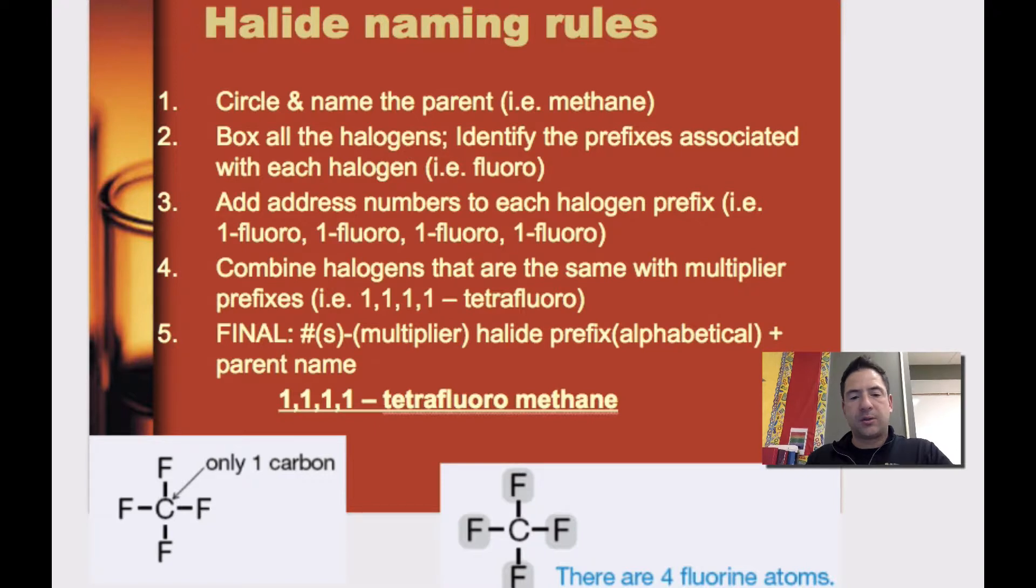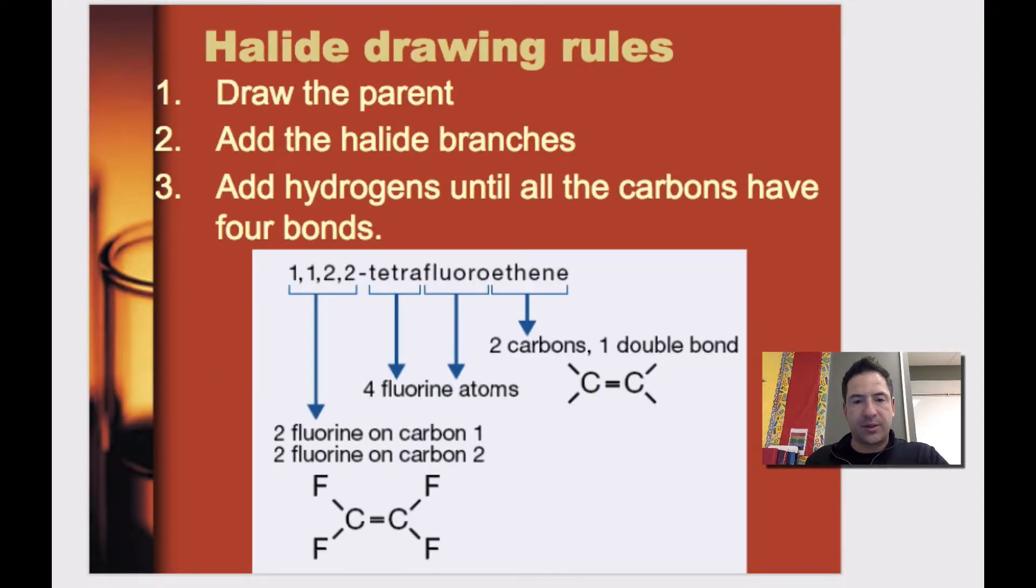So we will move on, and you'll see some more of these rules. Now we're going to talk more about the drawing rules. If I was to give you this name up here, notice it says 1,1,2,2-tetrafluoroethene. Right here, for sure, we know ethene means there are two carbons. Tetra means there are four fluorines, so F's, and you can see that, four fluorine atoms.